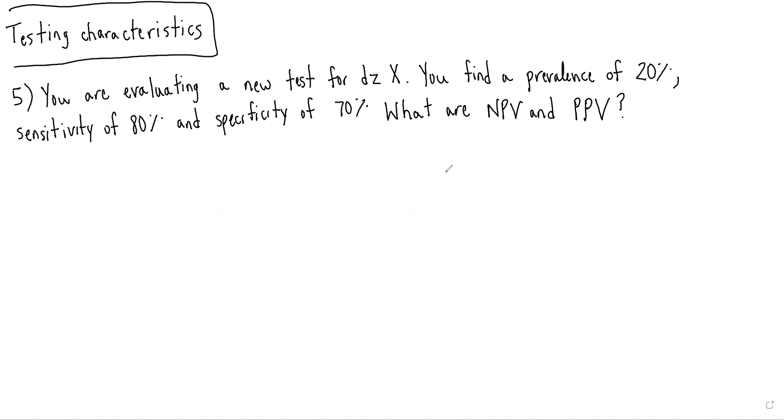So in this case, you are evaluating a new test for disease X. You find a prevalence of 20%, a sensitivity of 80%, and a specificity of 70%. What are the NPV and PPV? This is similar to question four, except rather than giving count data, we're given percentage data.